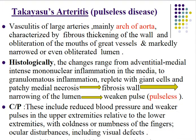Another type of vasculitis is Takayasu arteritis, also named pulseless disease — 'pulseless' because there is no pulse detectable. It is vasculitis of the large arteries, mainly the arch of the aorta, characterized by fibrous thickening of the wall and obliteration of the mouths of the great vessels. This obliteration results in pulseless disease due to narrowing of the major vessels supplying the upper limbs.